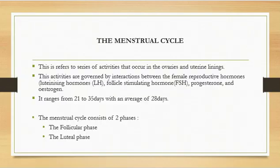So what is the menstrual cycle? These are basically a series of activities that happen in the ovary and the uterine lining. These activities are controlled by the interactions of female reproductive hormones, which include estrogen, progesterone, follicle-stimulating hormone, and luteinizing hormone. This cycle ranges from 21 to 35 days, with an average of 28 days.